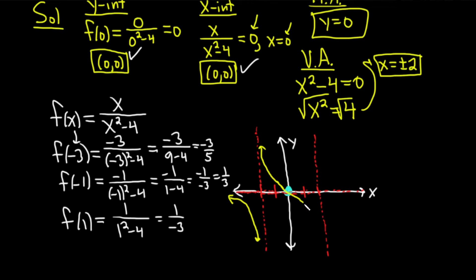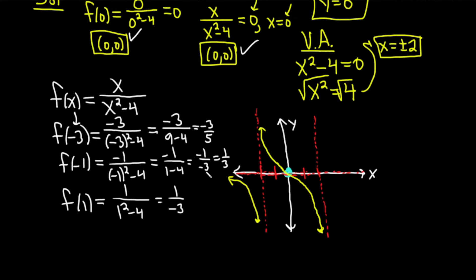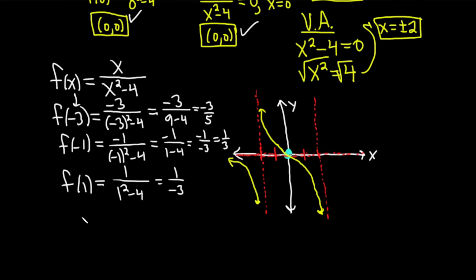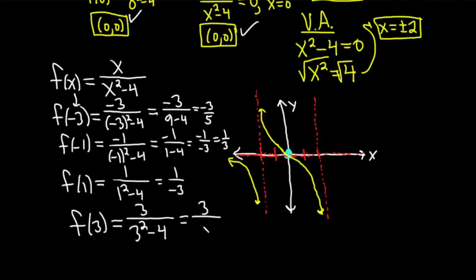It's going to cross and look something like this because it has to be negative, really approaching that asymptote. Let's do f of 3: 3 over 3 squared minus 4, which is 3 over 9 minus 4 equals 3 over 5. So it's positive, going up here. This was definitely not the easiest problem — it took some work, but that would be the graph of a rational function.